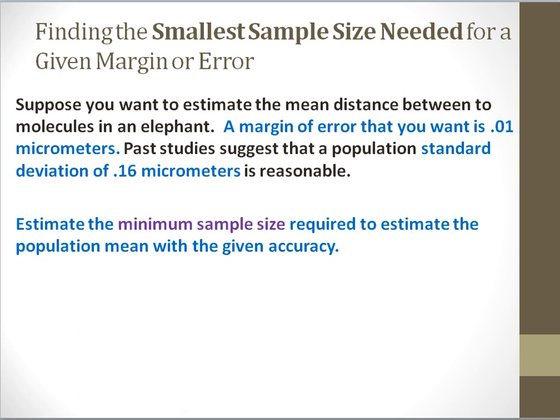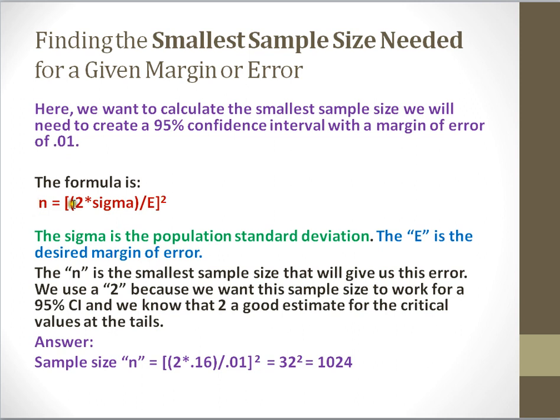So how do I do that? What's the formula to figure out the smallest sample size needed to get a certain margin of error? Well, here's the formula. Again, it's a nice estimate of the formula. We're using a 2 here. And the sample size N that I'm going to need to give me a 95% confidence interval with a margin of error of 0.01 is the following.